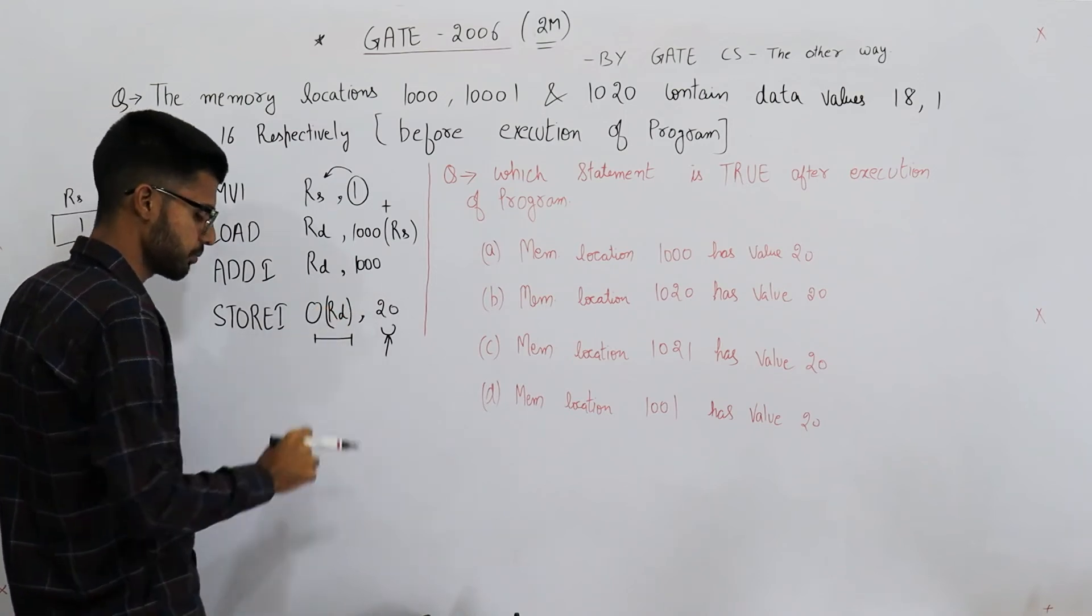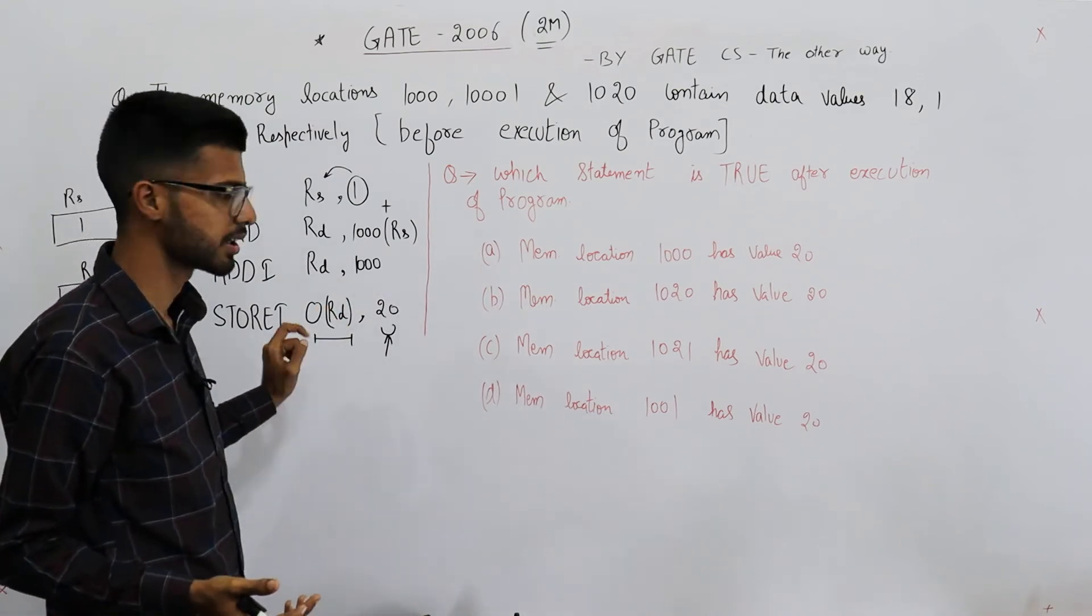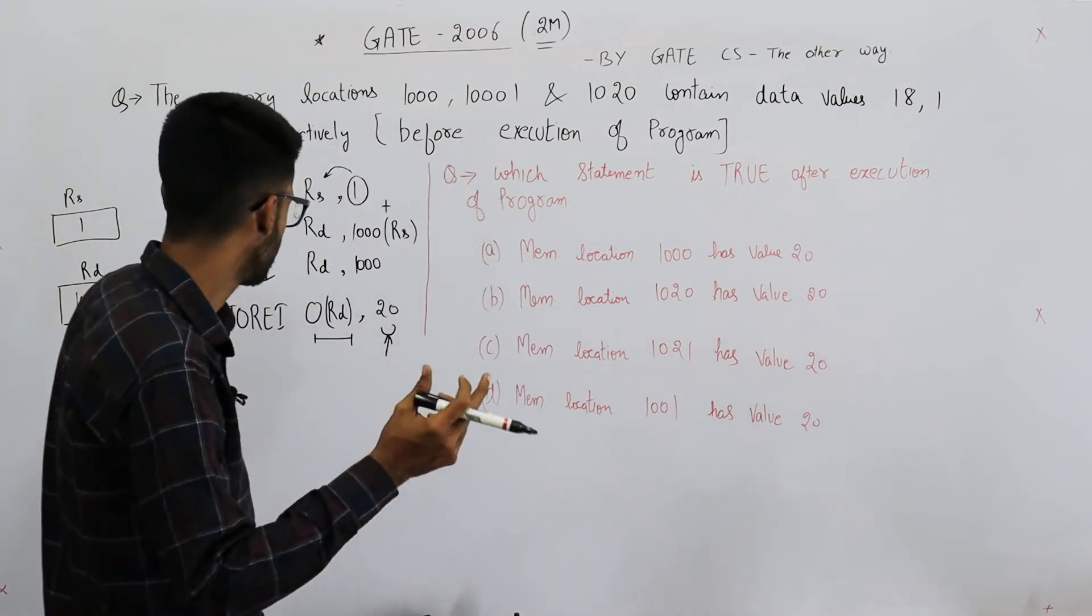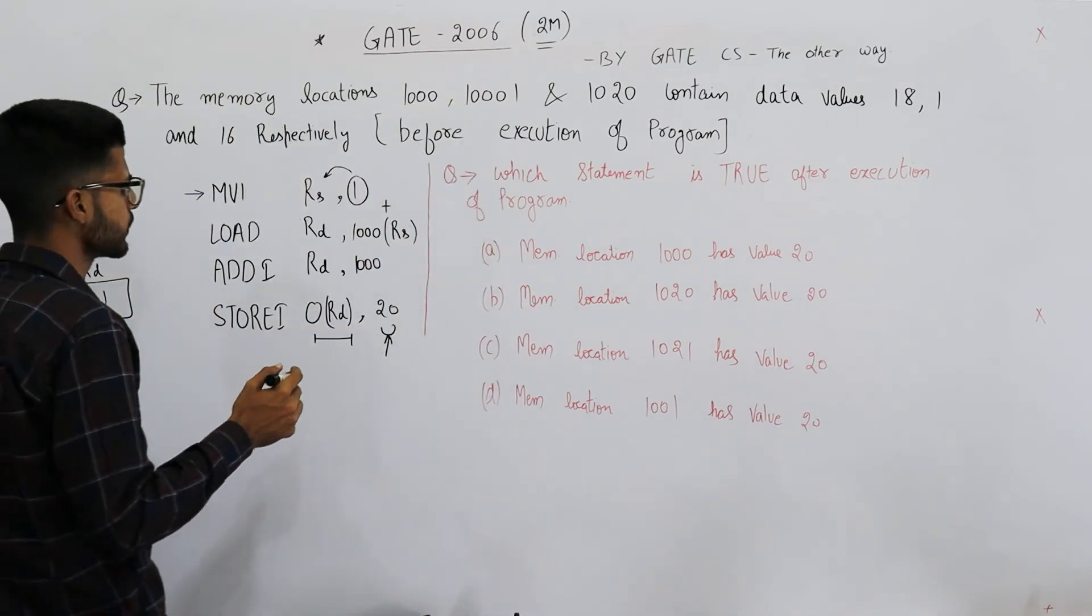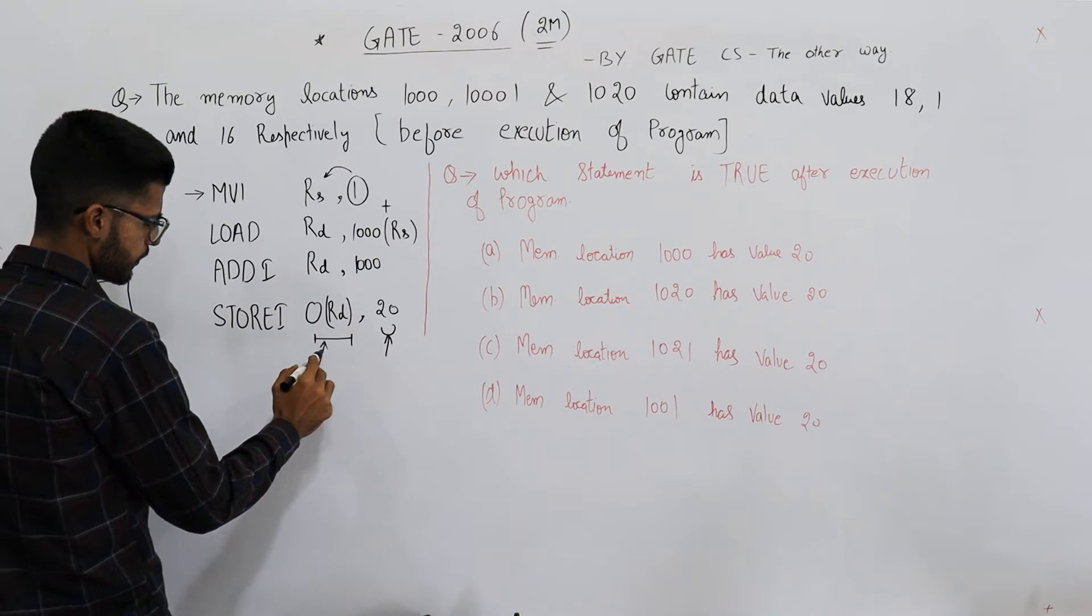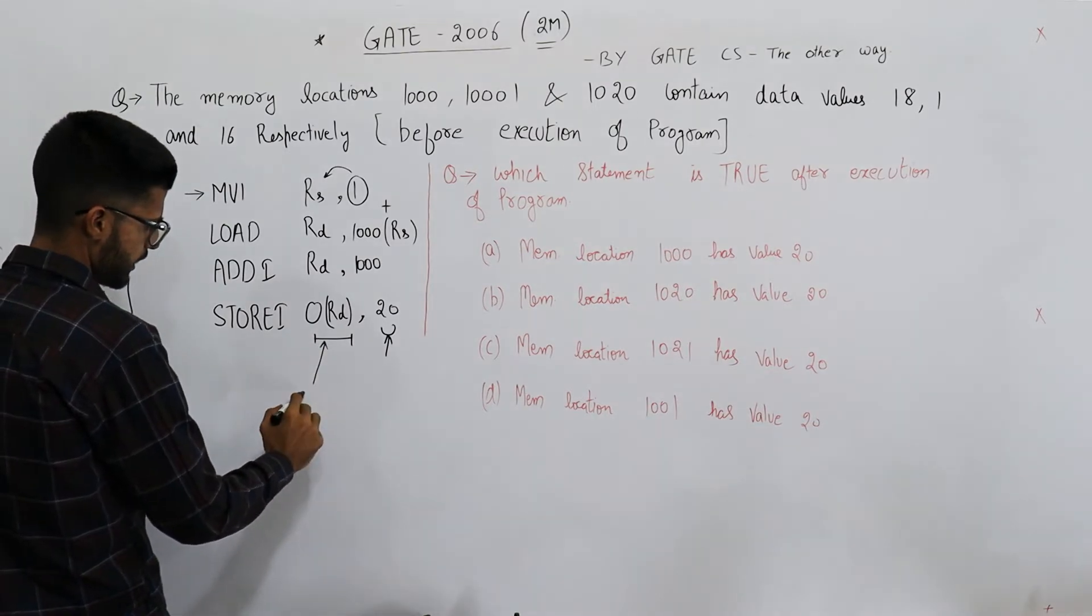This, you can see, is very similar to the third instruction. We have some number and then brackets - that means this number is the base address and the register contains the offset or index. This one is indexed addressing, and the entire instruction uses immediate addressing. So two addressing modes are being used in the same instruction.